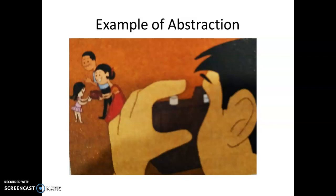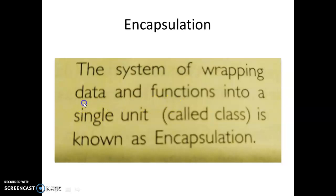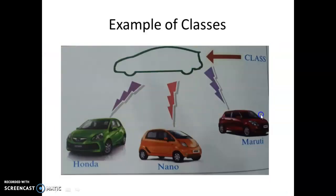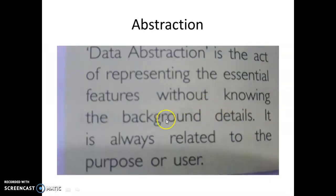Another example: if you want to drive a car, then you know about the accelerator, clutch, and gear — these parts you know. But how the internal mechanism works, how it works internally, we don't know. So abstraction means keep the essential parts — you only understand the essential parts without knowing the background details. We only need to know the essential things, and we don't need to know the whole thing.